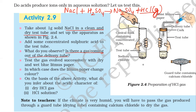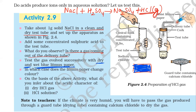Test the gas evolved successively with dry and wet litmus paper. It is HCl gas, so we will test it whether it is acidic or not. We will bring a litmus paper — blue litmus paper — and it should turn to red if it is acid. When dry litmus paper is brought near the HCl gas, we observe that there is no change in the color of the litmus paper.